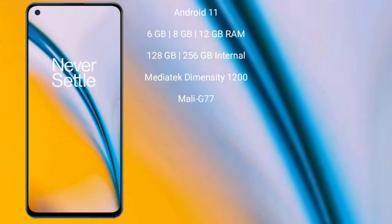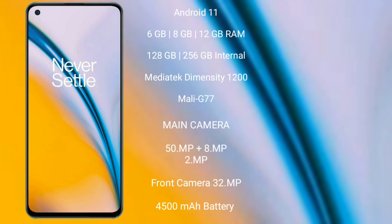The OnePlus Nord 2 runs on Android 11. It comes with 6GB, 8GB, or 12GB of RAM, and 128GB or 256GB of internal storage. It is powered by a MediaTek Dimensity 1200 processor with a Mali-G77 GPU.